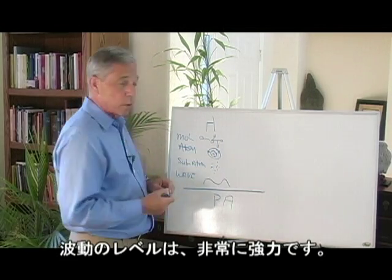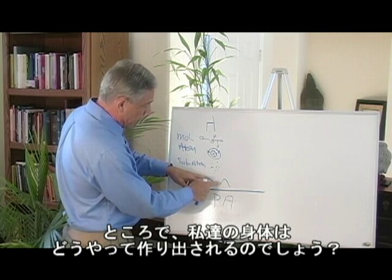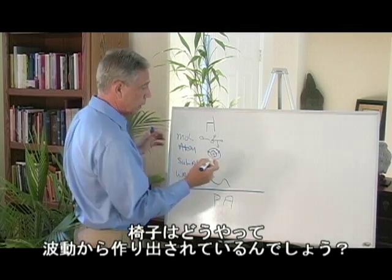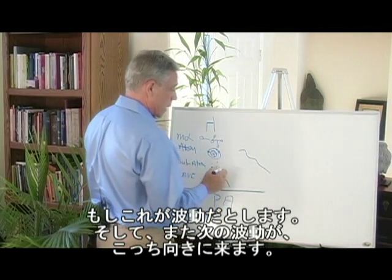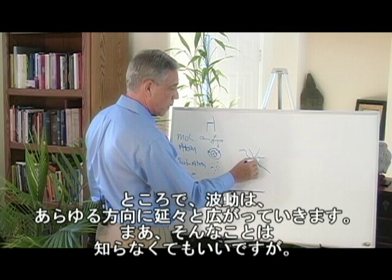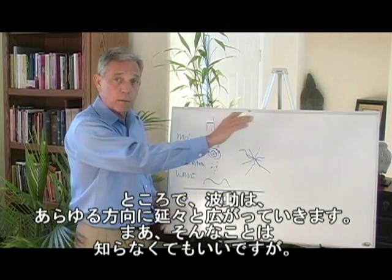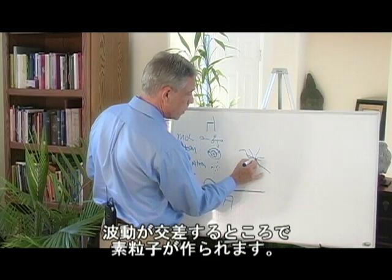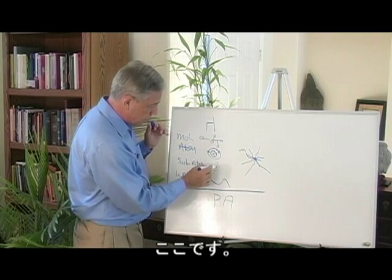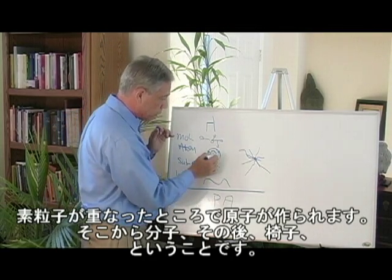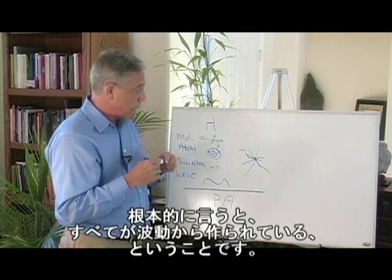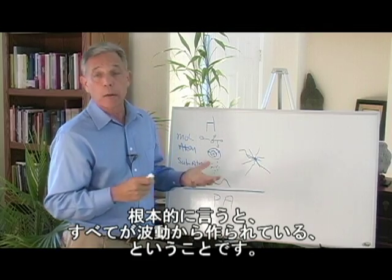The wave level is extremely powerful. How does a chair come out of a wave? If this is a wave going this way, and another wave going this way, and another wave going this way — waves go infinitely in every direction — where they intersect, you have a particle. Where particles come together, you get an atom, then a molecule, then a chair. So basically, everything is made out of vibrations.